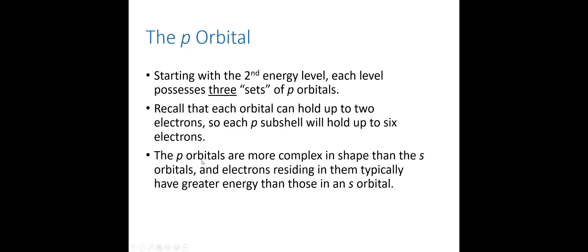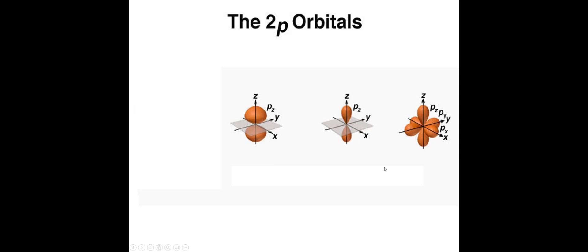P orbitals have a more complex shape than S orbitals. Here's one way of representing them, and here's another way of representing exactly the same thing. This whole figure is one P orbital — not just one lobe, but the entire dumbbell shape. So how many electrons can fit in here? Up to two. There's no rule saying one has to be in one lobe and one in the other, although it's more likely they would be in different lobes. This picture shows us where we are most likely — about 95% of the time — to find the electrons.